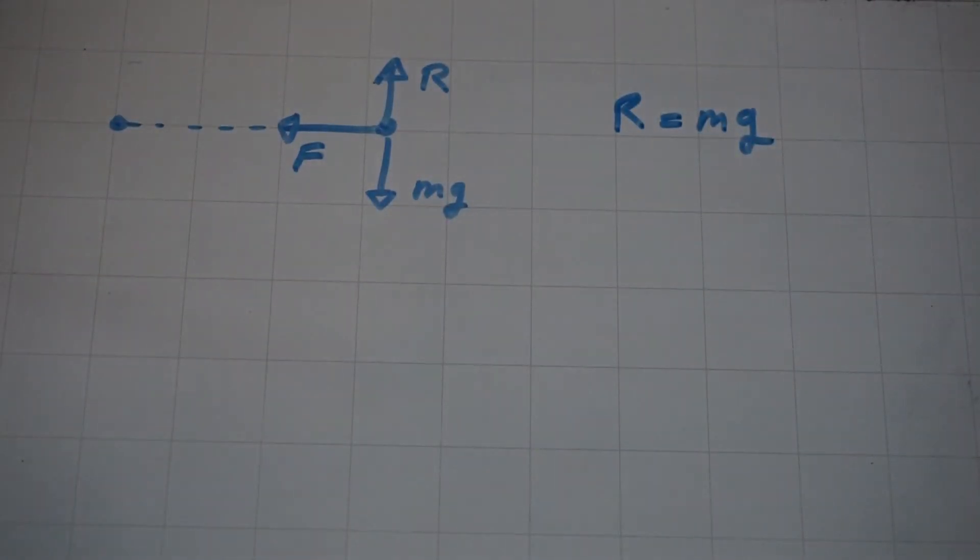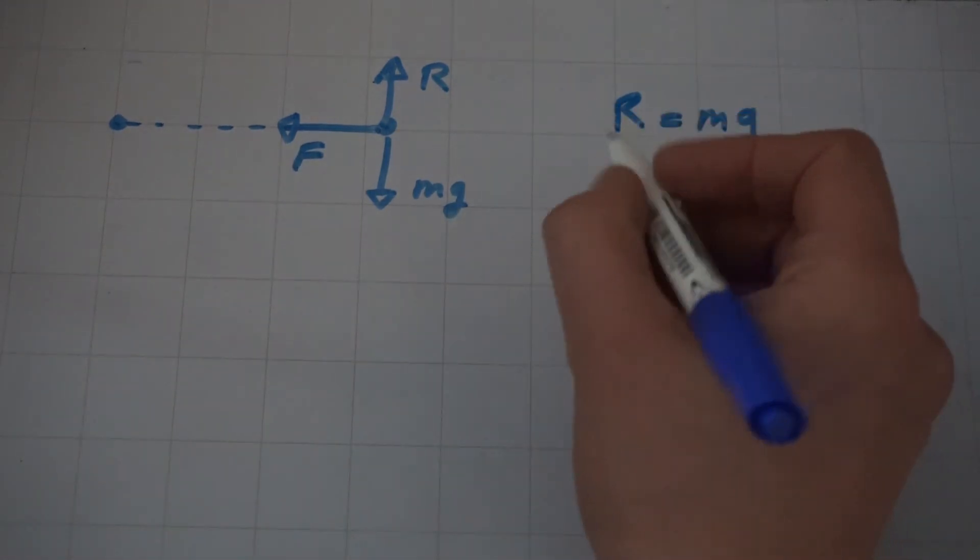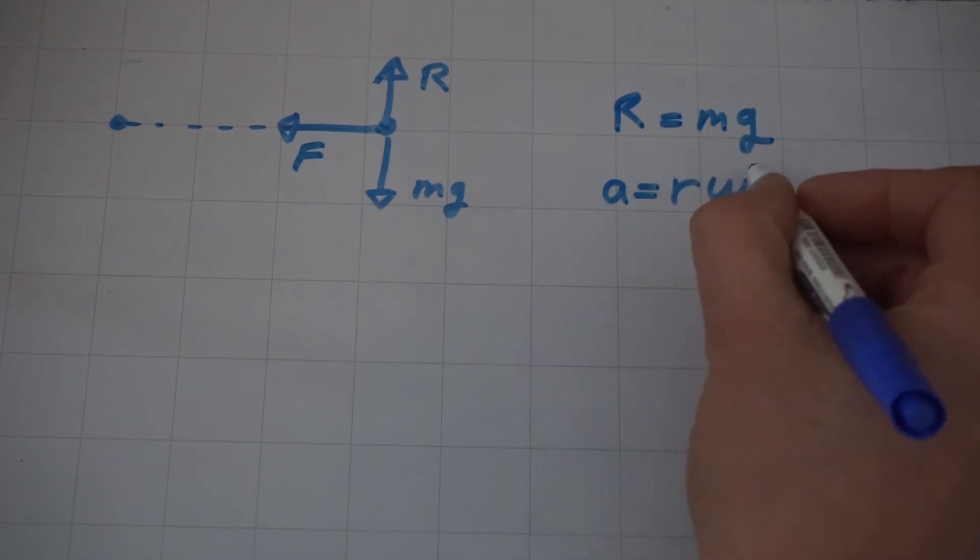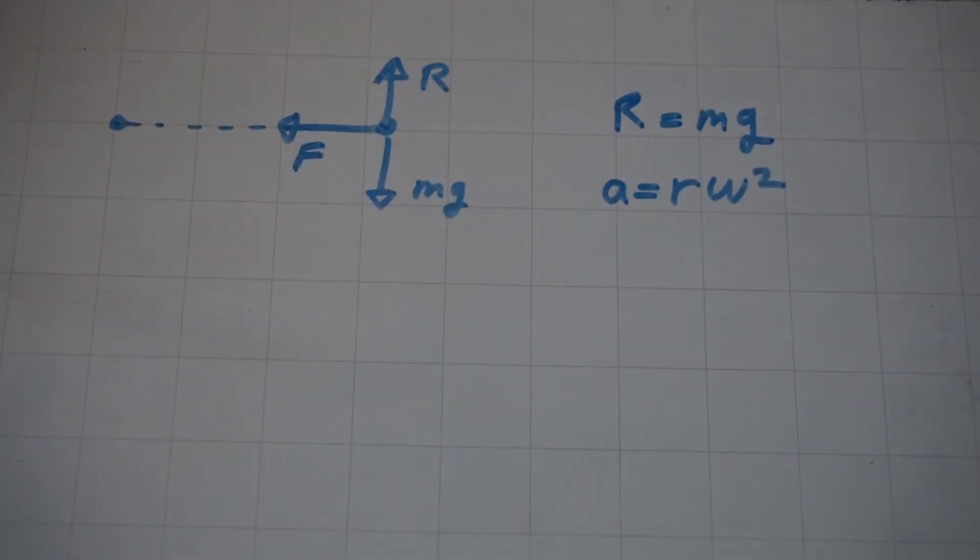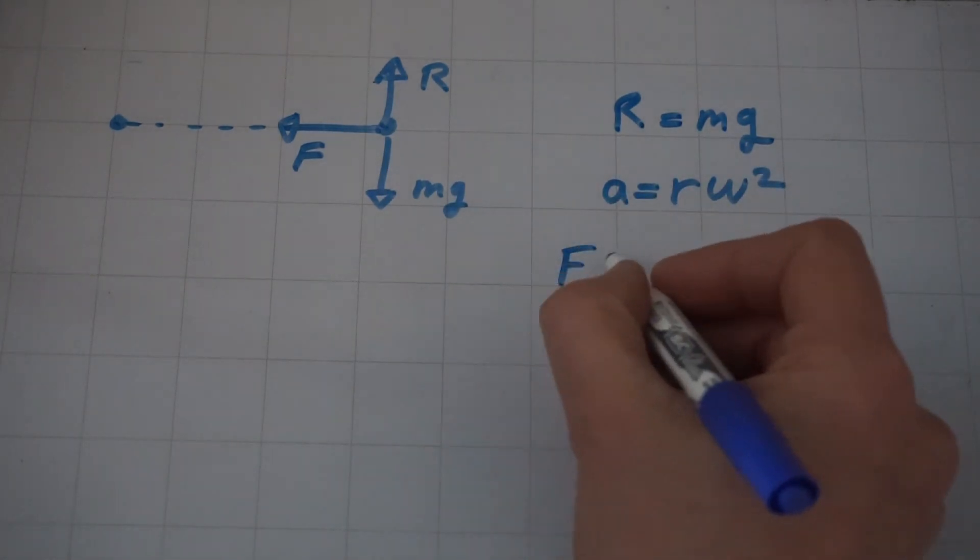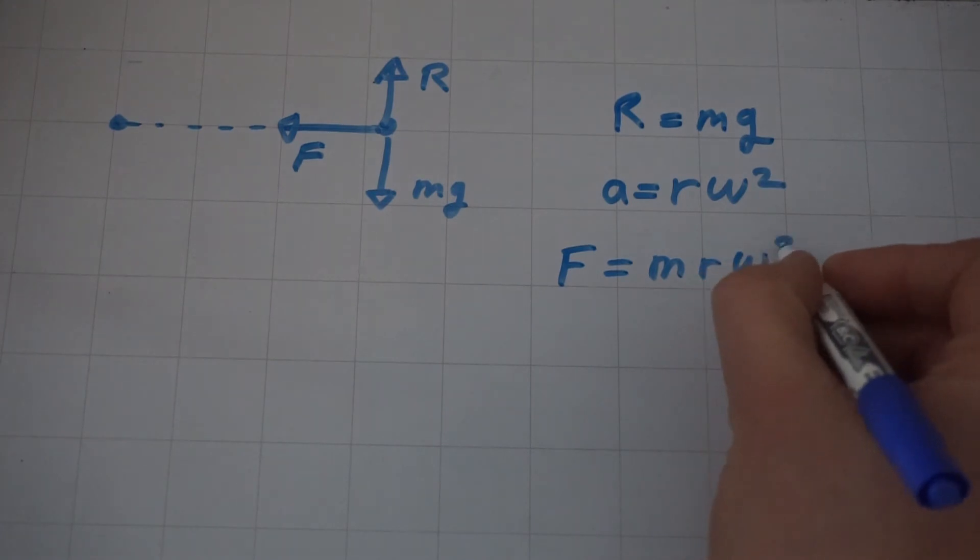The resultant force will be F, the friction force acting towards the centre. And this must be equal to the mass times acceleration. But the acceleration is equal to R omega squared, where R is the radius and omega is the angular speed. So the friction force will be equal to m R omega squared.